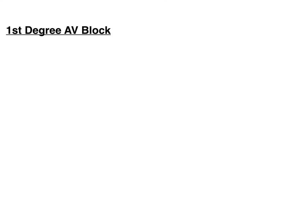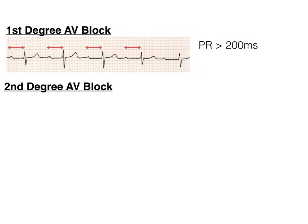A first degree AV block looks like this. What you have in a first degree AV block is just prolonged PR intervals — they are constant, they are prolonged, and that's it. Whereas in normal sinus rhythm the PR interval was less than five boxes, a first degree AV block is a PR interval that's greater than 200 milliseconds or greater than five little boxes. I've drawn in reddish arrows to illustrate that to you.